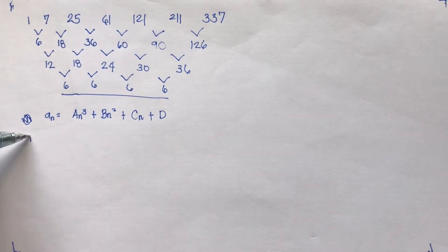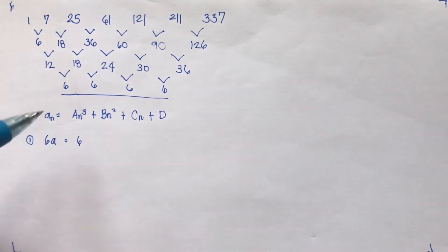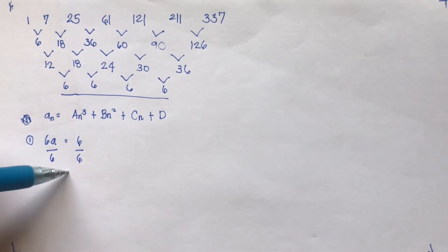So the first formula goes like 6a equals the third layer value, which is 6. So 6a equals 6. Divide this by 6. a is equal to 1.